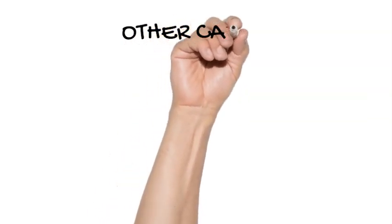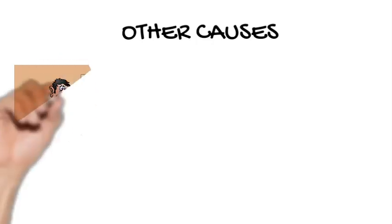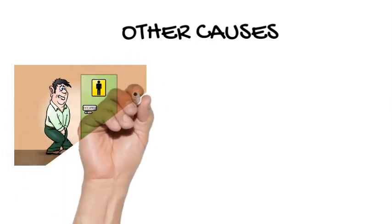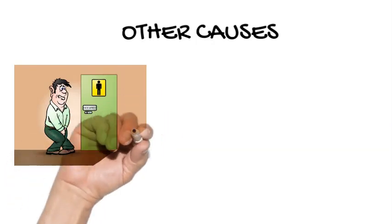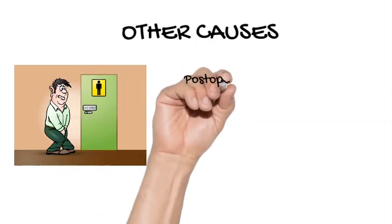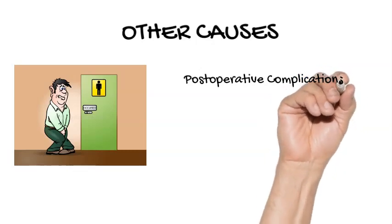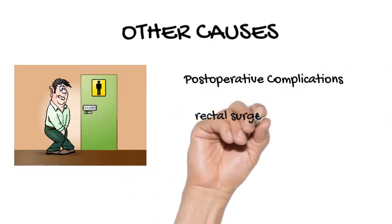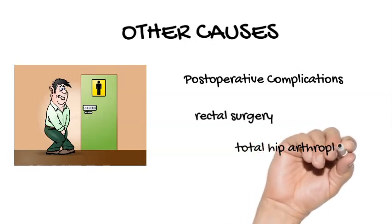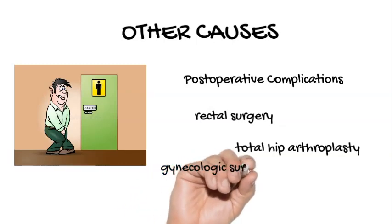Other causes. Postoperative complications including pain, traumatic instrumentation, bladder over-distension, and pharmacologic agents — particularly opioid narcotics — are all thought to play a role. After rectal surgery, total hip arthroplasty, and outpatient gynecologic surgery, patients may develop urinary retention. Pregnancy-associated urinary retention is usually the result of an impacted retroverted uterus causing obstruction of the internal urethral meatus, most often at 16 weeks gestation. Acute injury to the urethra, penis, or bladder may also cause urinary retention. Bladder rupture and urethral disruption can occur with pelvic fracture or traumatic instrumentation.